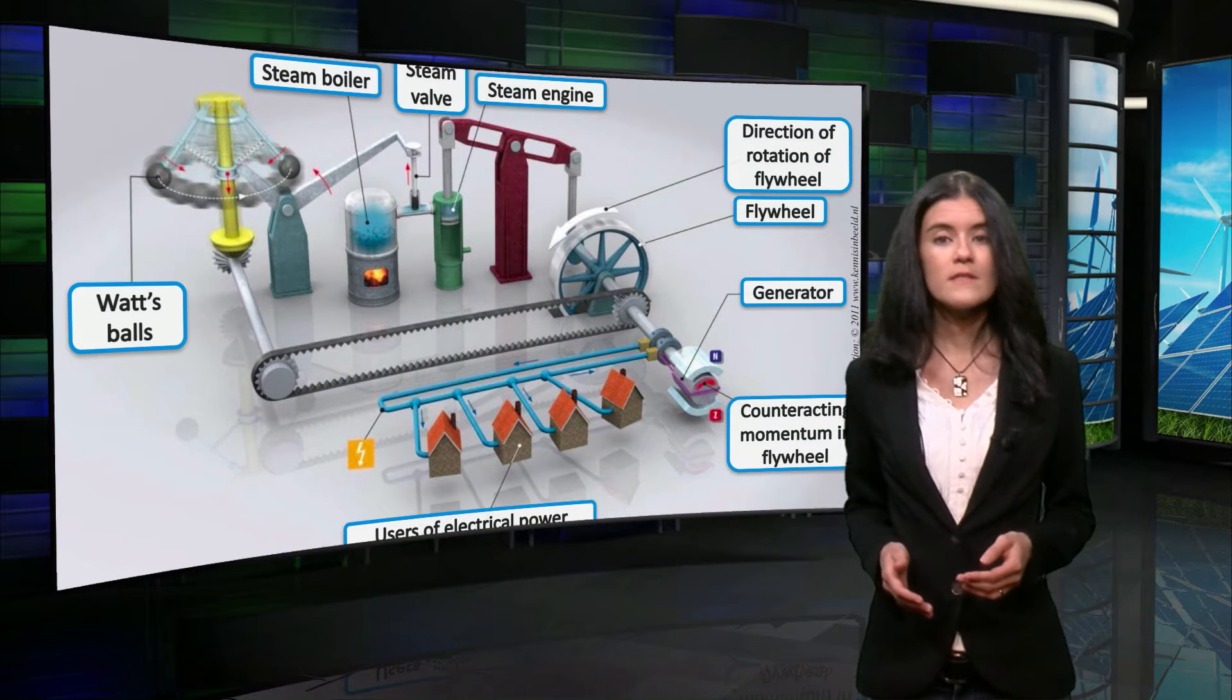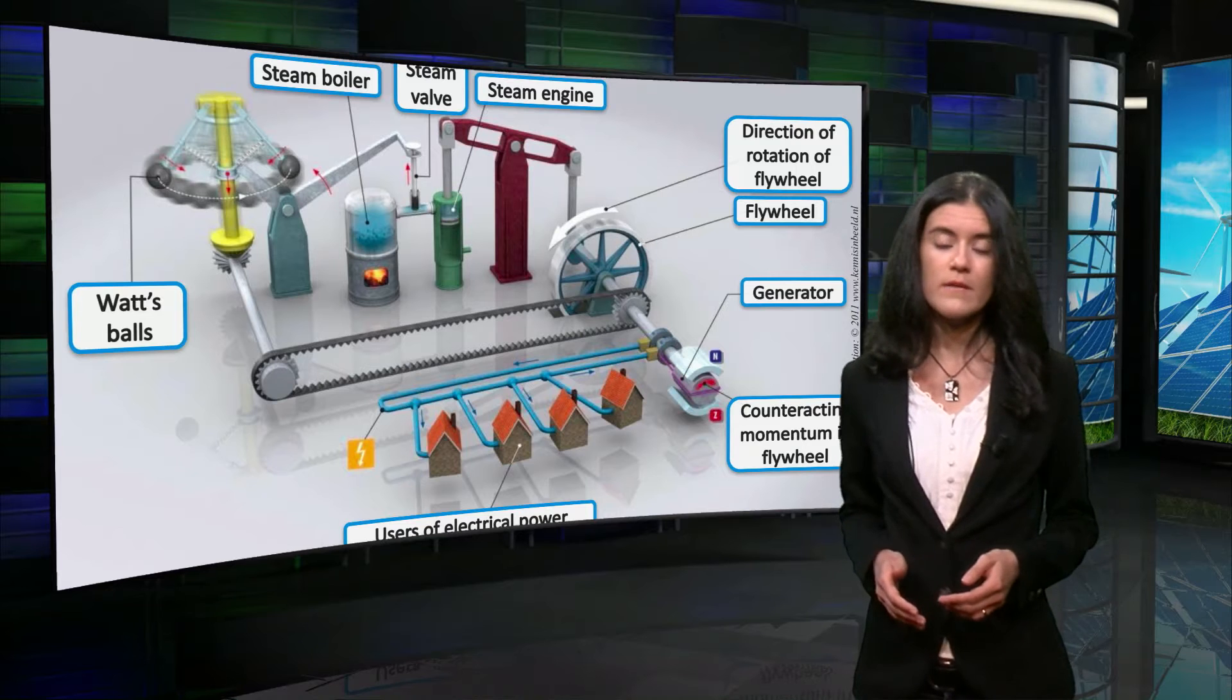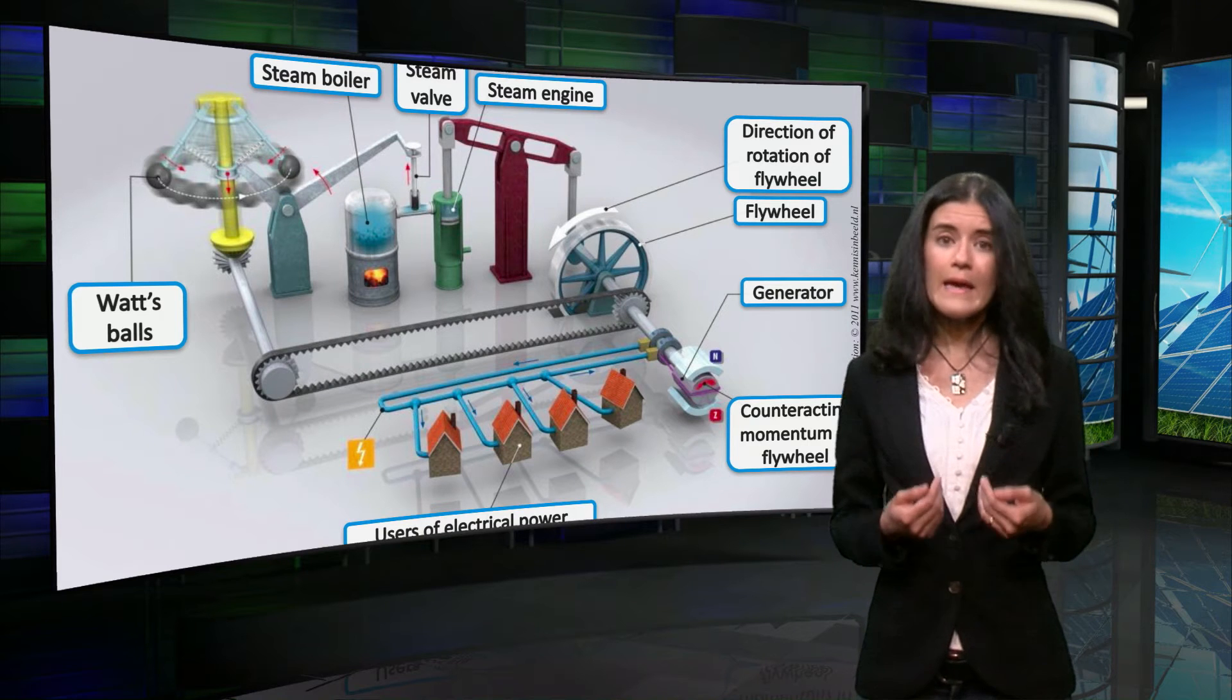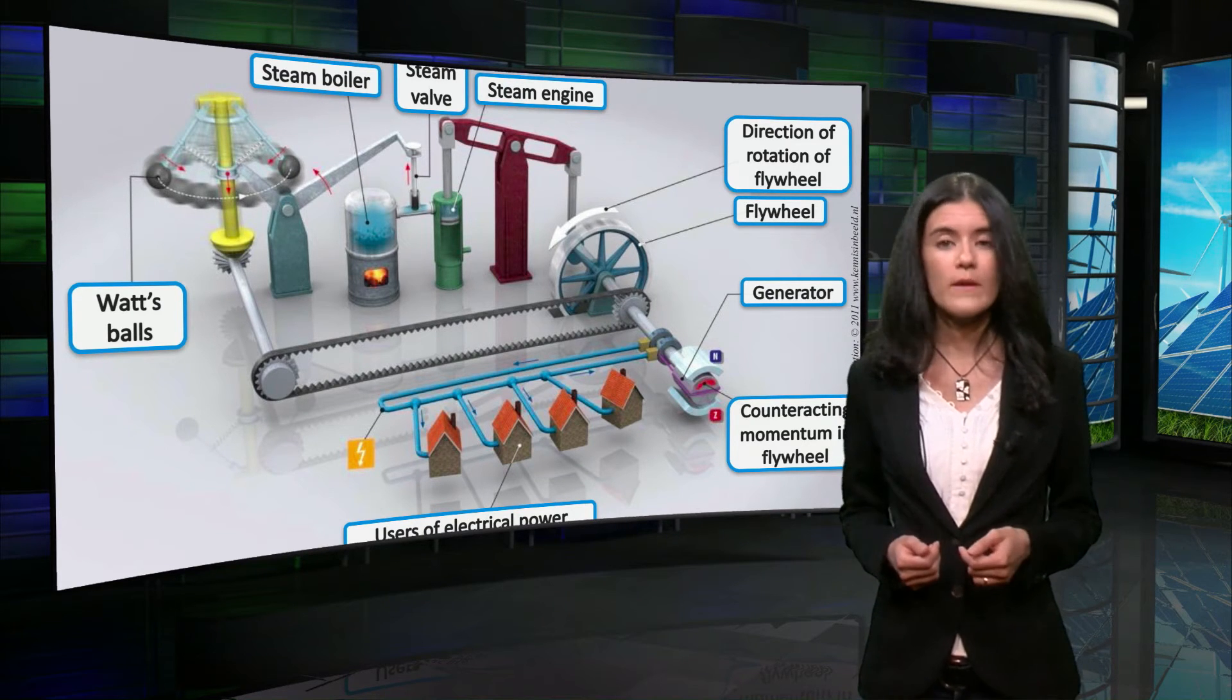In a traditional power system, a centrifugal governor controls the speed of a machine by regulating the amount of fuel that is supplied to it. In this way, a near constant speed independent of the load can be achieved.